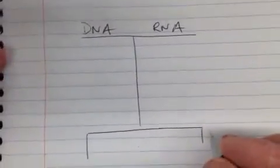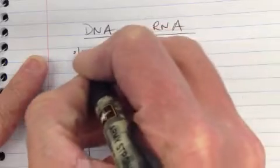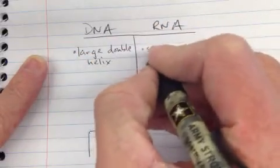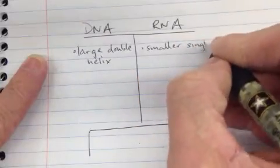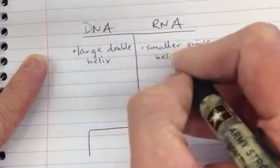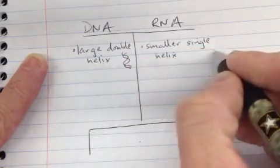So to cover that, let's make a little Venn diagram. First of all, DNA is a large double helix, whereas RNA is smaller and it's a single helix. So whereas DNA is made up of two helices, RNA is just one spiral helix.